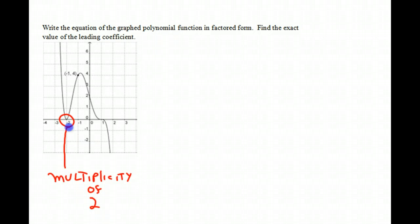If we look at the other zero, we notice that it kind of flattens out here, and then goes through the axis. Therefore that's considered to be a triple root or a multiplicity of 3.